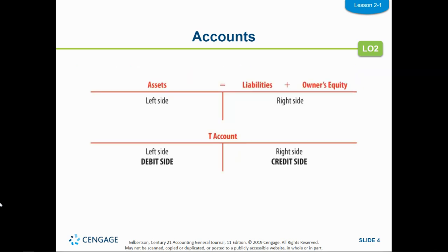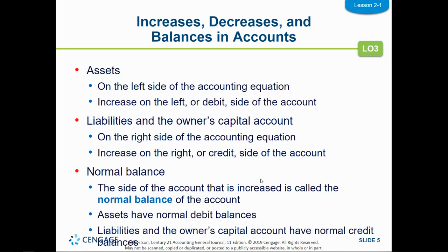When we look at our T-Account placed underneath assets equals liabilities plus owner's equity, the left side of that T-Account is the debit side, and the right side is the credit side. That's going to be important as we start analyzing transactions. An asset is on the left side of the accounting equation, and assets always increase on the left, which means assets always increase with a debit. Liabilities and owner's capital fall on the right side — the credit side — so they always increase with a credit and decrease with a debit.